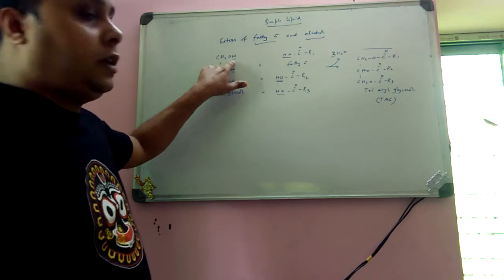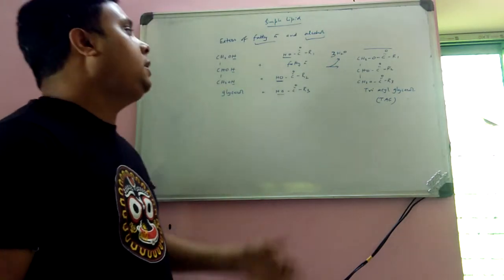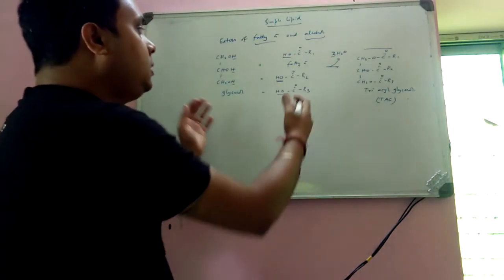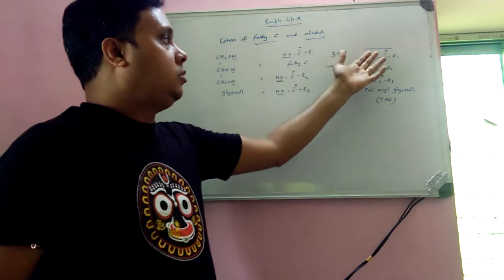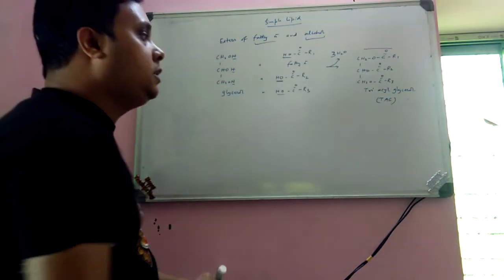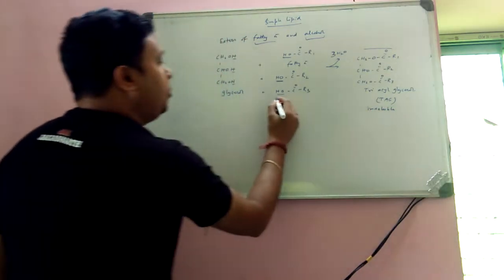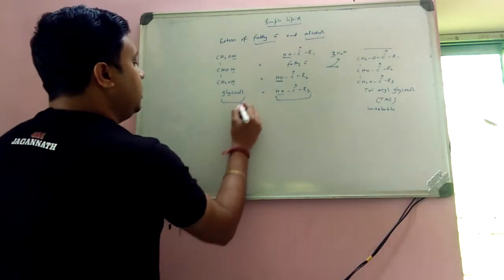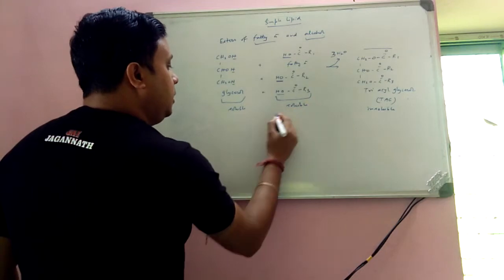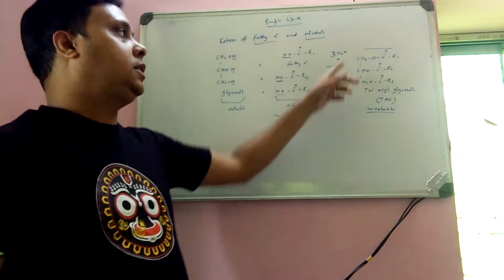One thing to note: glycerol contains hydroxyl groups, so glycerol is soluble in water. Simultaneously, fatty acids contain a carboxyl group, so these are also soluble in water. But once they form an ester — because of elimination of water — they become insoluble. So TAG is totally insoluble in water, although its individual components are soluble in water. TAG becomes insoluble because no free hydroxyl or carboxyl groups remain; it has formed an ester.